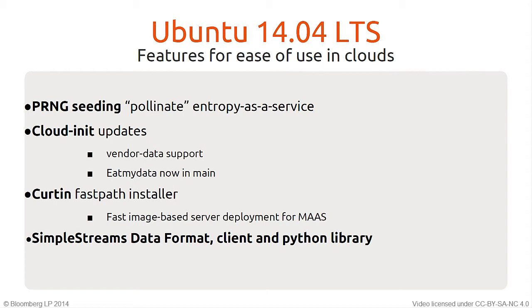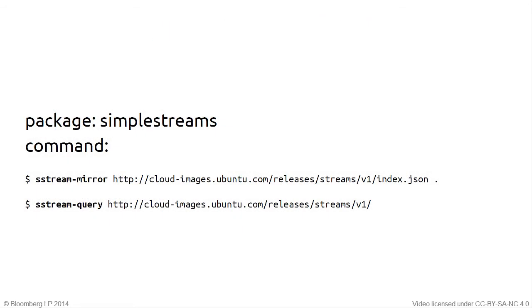Simple Streams is a simple data format with a client and Python library that parses along with it. The documentation is almost nonexistent, but I got my head around it. This command will return a JSON-formatted machine-readable document of all of our current cloud images on every public cloud, region, version, and everything. A use case might be: you want to make sure you're always running the latest image — you could easily script that rather than hopping over to our website to find the AMI number.